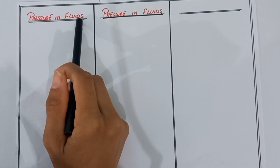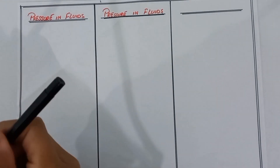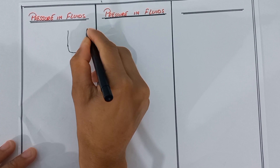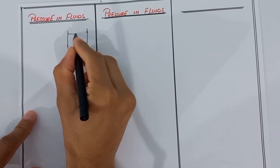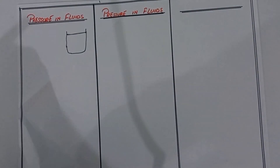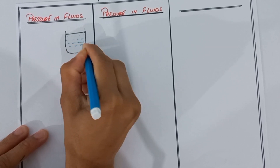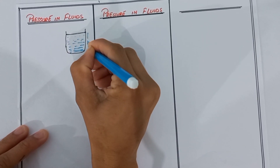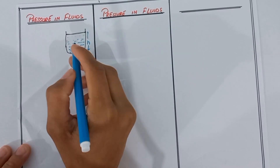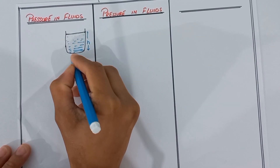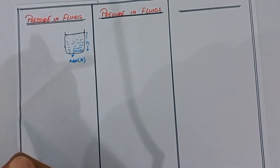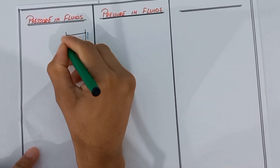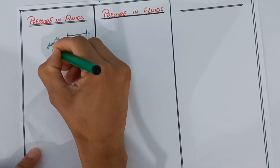We know that fluids also exert pressure. We take a container that is full of water. The height of the water is denoted by H, and the area is denoted by A. We know that the density of water is denoted by rho.